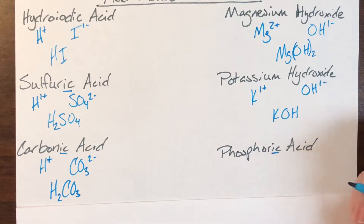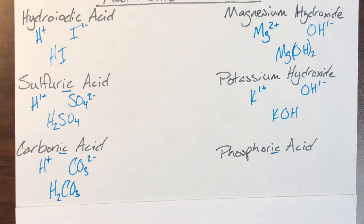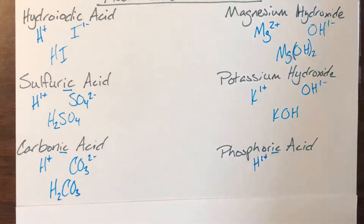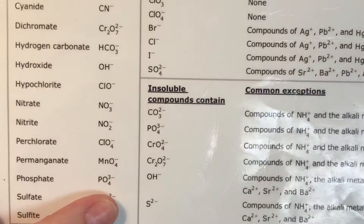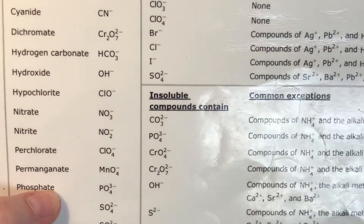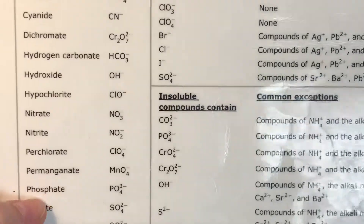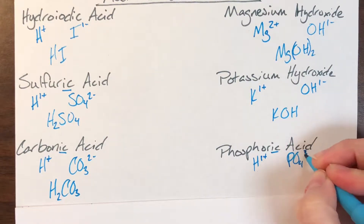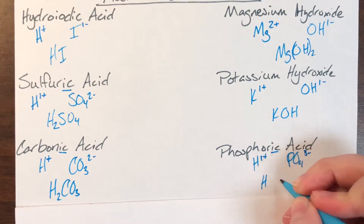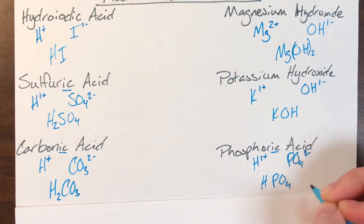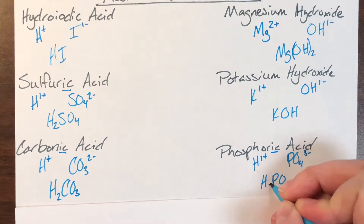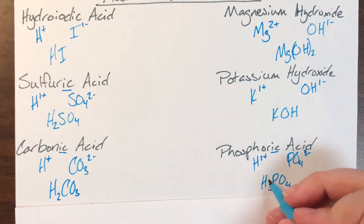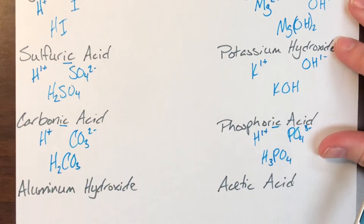Phosphoric acid. The '-ic' ending means I am looking for the '-ate' form, and 'acid' means I'm starting with hydrogen. The polyatomic ion I'm looking for is phosphate: PO₄³⁻. Writing them together: phosphate's three becomes hydrogen's three, and hydrogen's one becomes phosphate's one — I don't write ones. So H₃PO₄ is phosphoric acid.